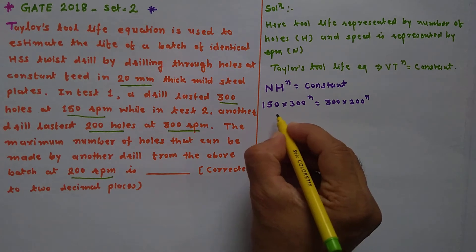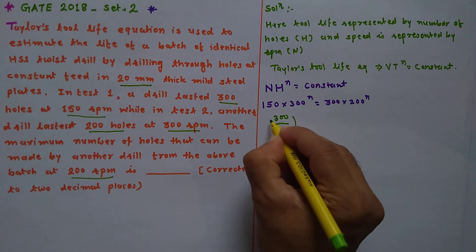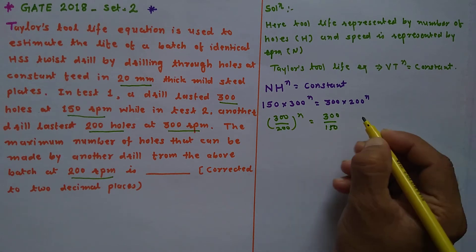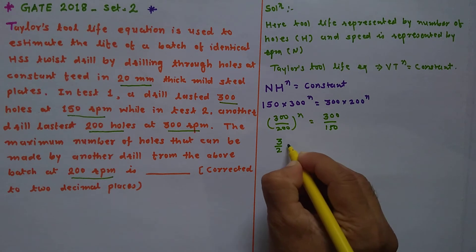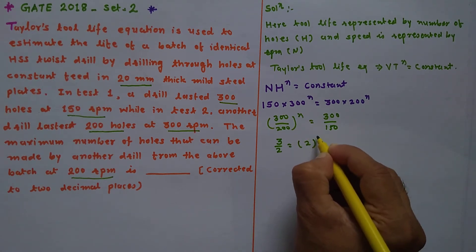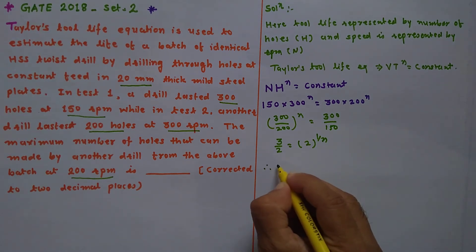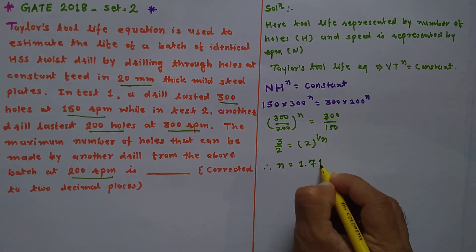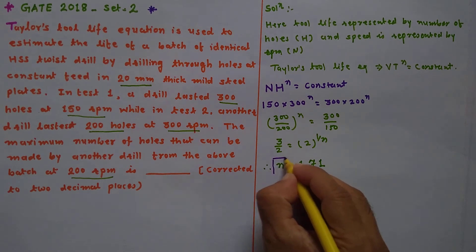We can write 300/200 raised to n equals 300/150, which simplifies to 3/2 = 2 raised to 1/n. Solving this equation, we get n = 1.71. So we have now found the value of n.